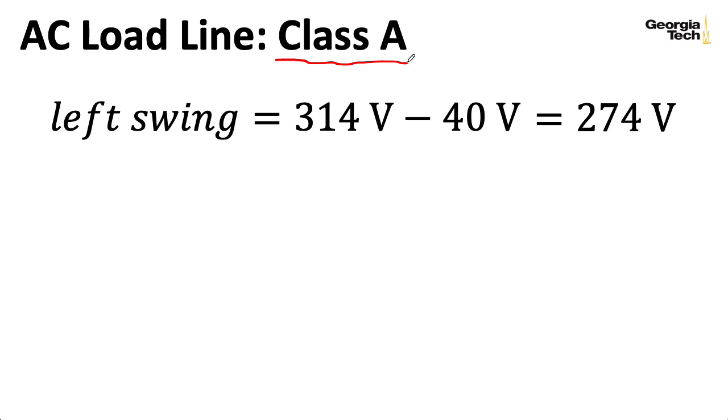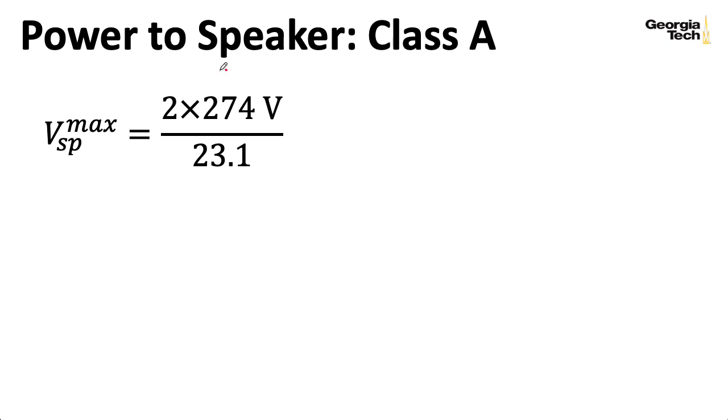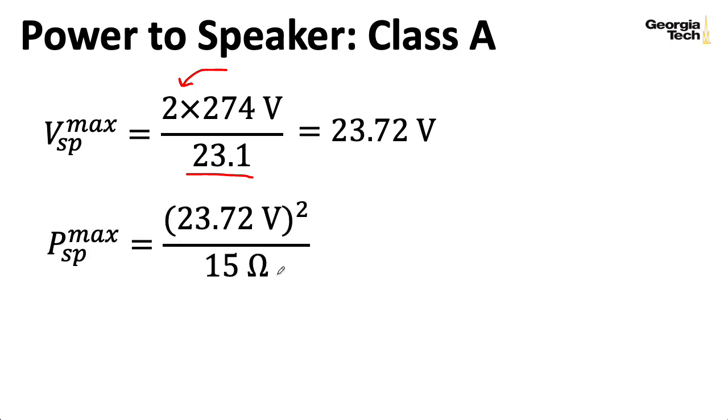So, assuming for the moment that I could really treat this as a class A amplifier, I'll come back to that point. How much voltage can I apply to the speaker? Well, remember that I have two tubes operating together. So, I don't just get 274 volts. If I look at the transformer end to end, I actually have twice that, because I have these two tubes working together. Now, if I were to divide that by the turns ratio 23.1 I computed earlier, we're delivering 23.72 volts maximum to the speaker.